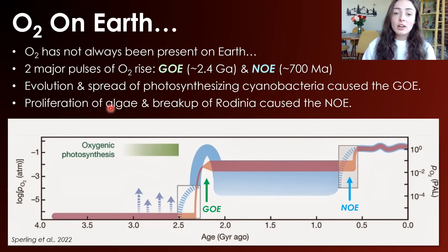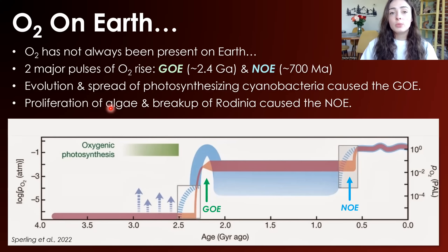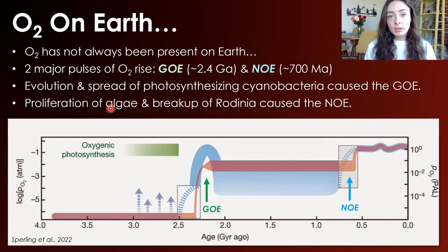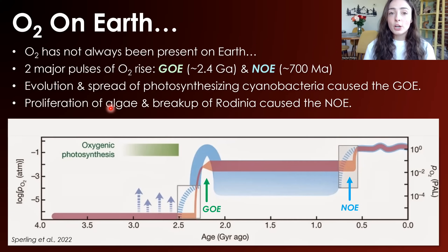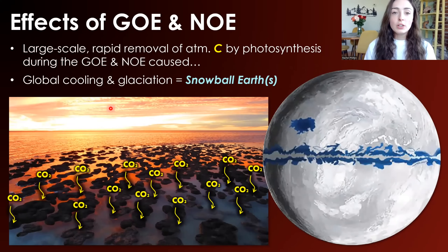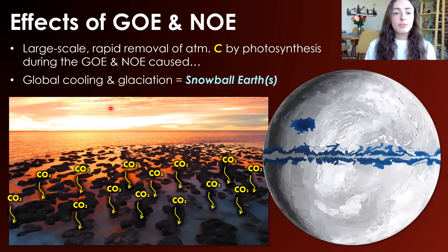The NOE was also caused by other factors like the breakup of Rodinia, one of the first supercontinents in Earth's history, which led to an increase in the rate of continental weathering. As I've talked about in many videos, this causes an increased rate of carbon burial. The burial of carbon — or removal of carbon from the atmosphere into the biosphere, hydrosphere, or geosphere — causes atmospheric cooling because it decreases the greenhouse effect.